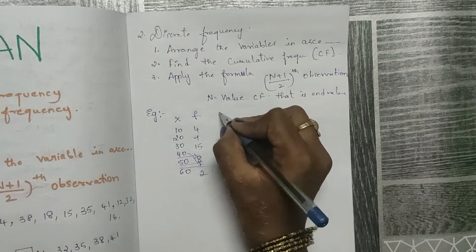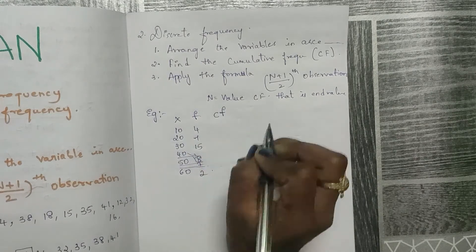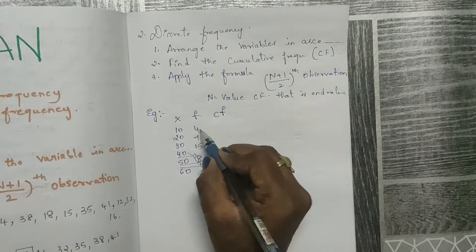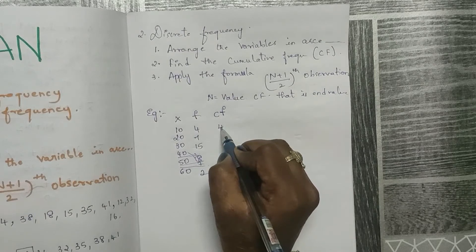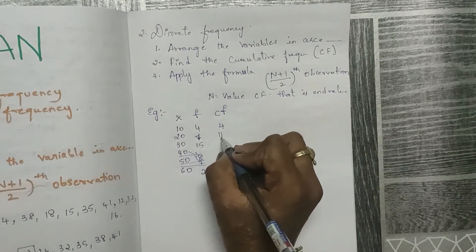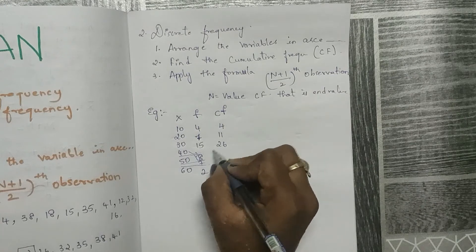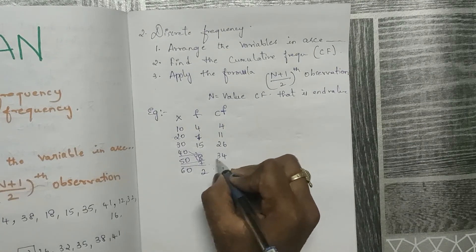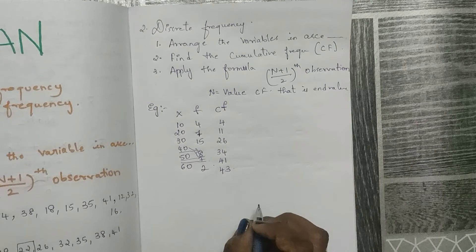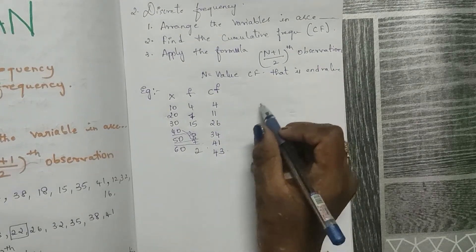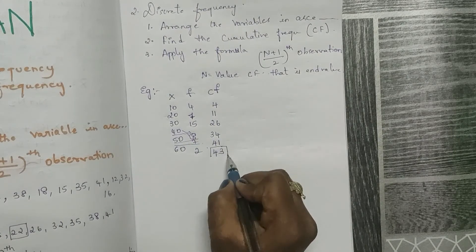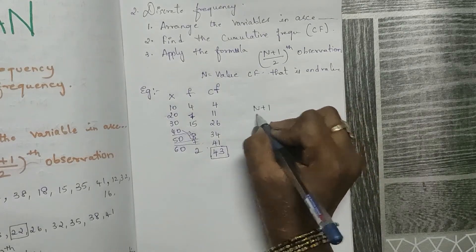Now I need to find the cumulative frequency. Take the first frequency value as it is, then add each successive frequency: 7+4=11, 11+15=26, 26+8=34, 34+7=41, 41+2=43. So n equals 43, taken from the last cumulative frequency value.